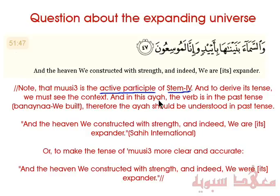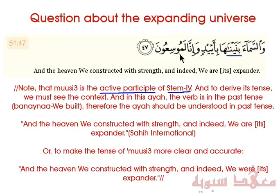And in this ayah, the verb is in the past tense. So if you look at it, it says 'wa samaa banaynaha' — and the heavens we constructed it. 'Banayna' is a past tense verb, and what he's saying is that this conjunction is joining the second part, which should also be referred to in the past tense, to make the tense of 'musa'' more clear and accurate. So he wants me to explain 'musa'oon' and its actual tense.